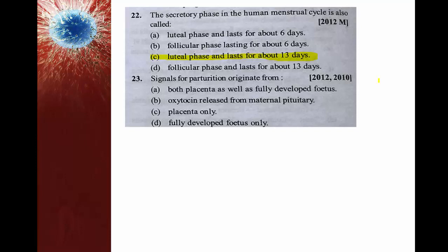Signals for parturition originate from both the placenta as well as the fully developed fetus — this is the definition of the fetal ejection reflex. There will be release of oxytocin that supports parturition, which is the release of the fully developed fetus from the female uterus.